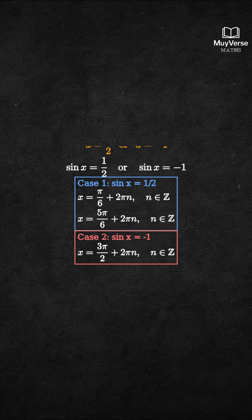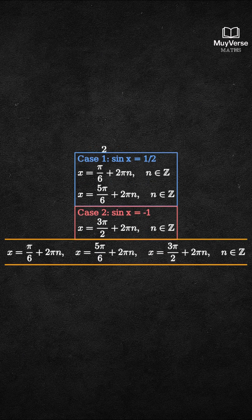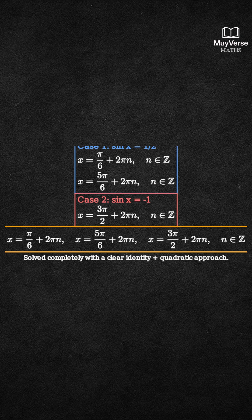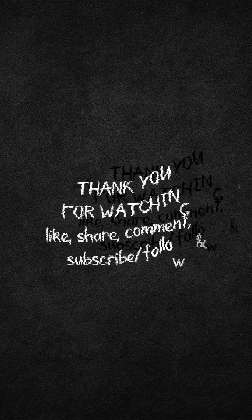Final answer: All solutions are x equals pi over 6 plus 2 pi n, x equals 5 pi over 6 plus 2 pi n, or x equals 3 pi over 2 plus 2 pi n. Thank you for watching.